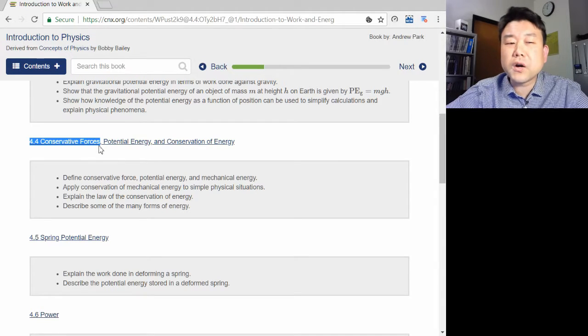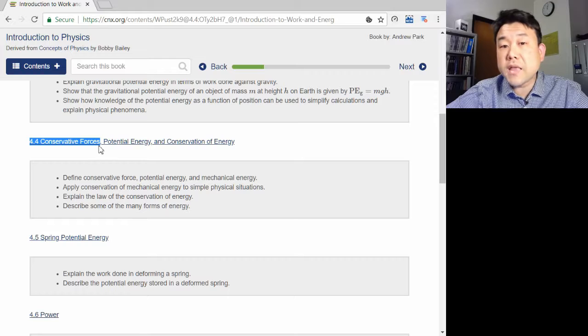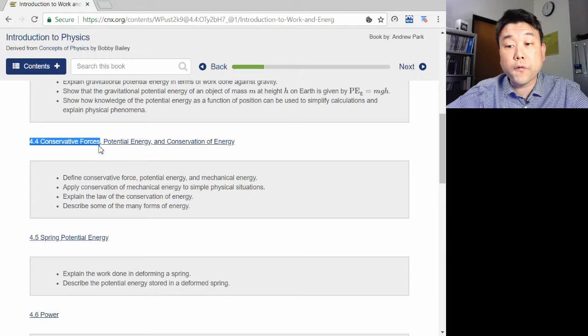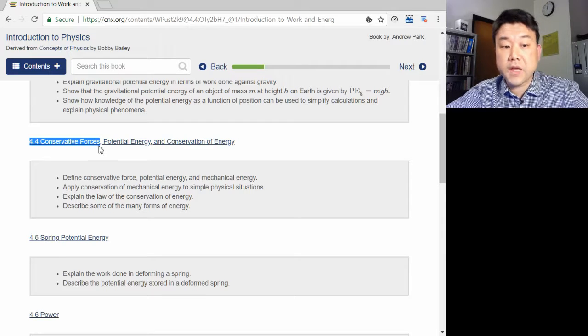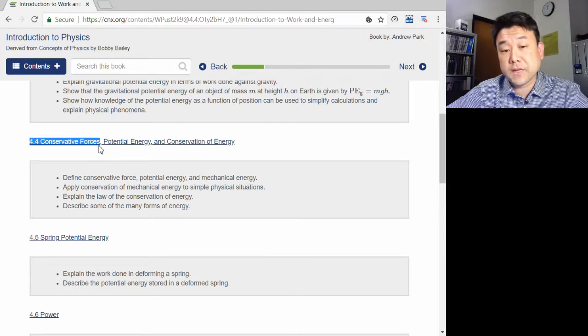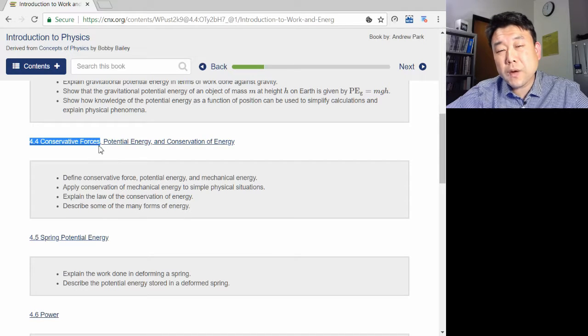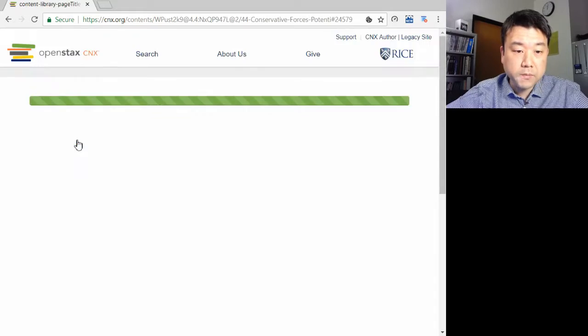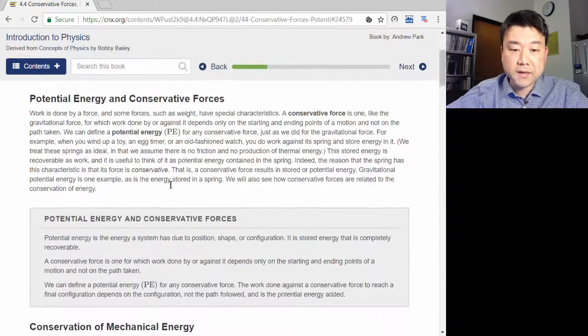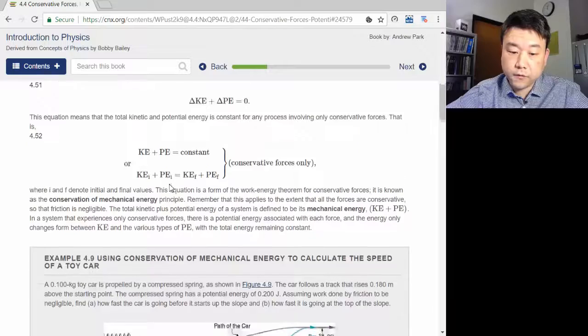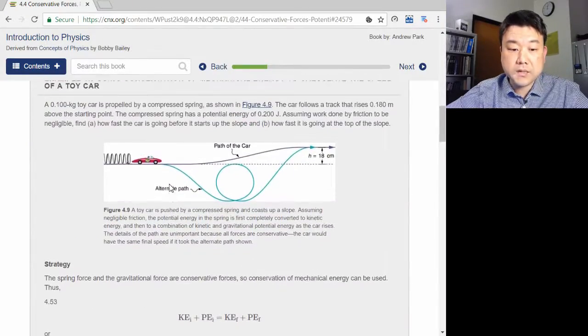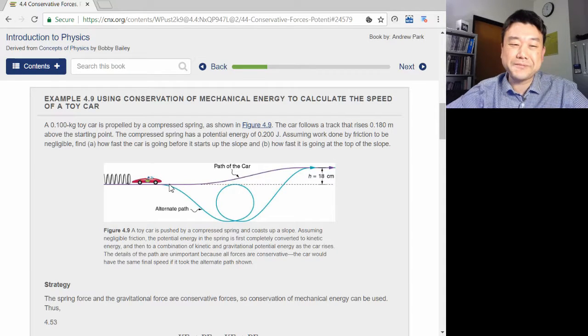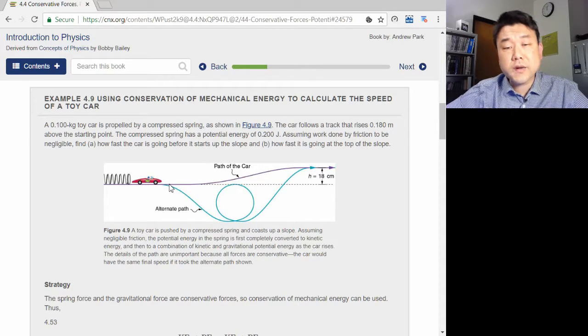But later on, you are going to see there are many more conservative forces. In fact, we believe that all four fundamental forces of nature are conservative at the very basic level. So what does it mean for a force to be conservative? Your textbook talks about it in terms of path independence. Amount of work done by conservative force is independent of path. Take example 4.9, for example. And it's correct as far as it goes.